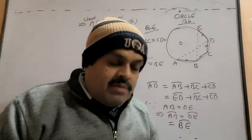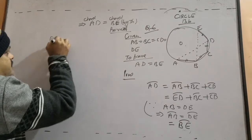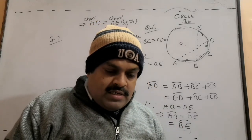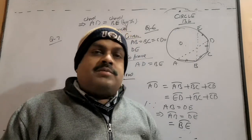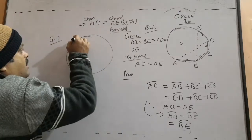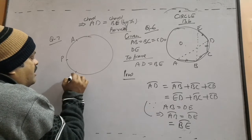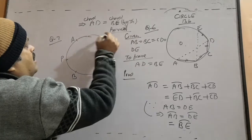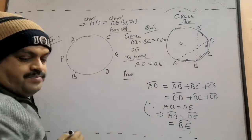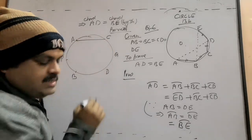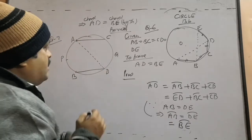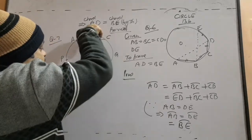Next one, question number 7. In this question 7, we have two arcs APB and CQD which are congruent. Congruent arcs means equal arcs. In this circle, the arcs APB and CQD are equal. Now we have to prove that chords AC and BD are parallel.